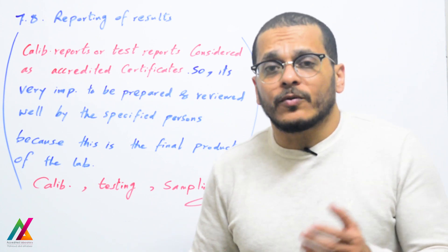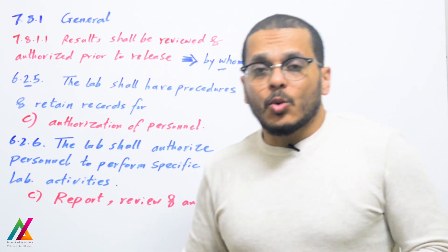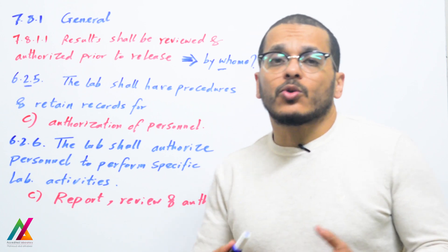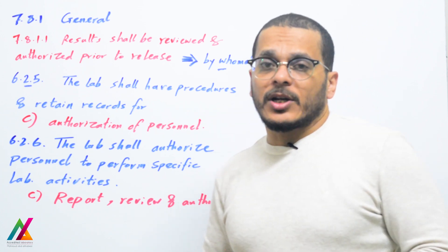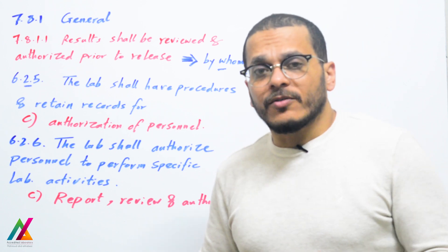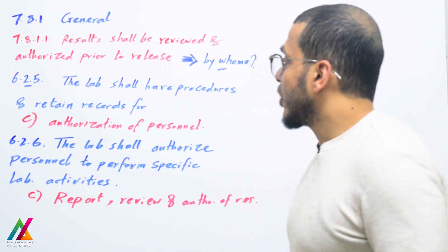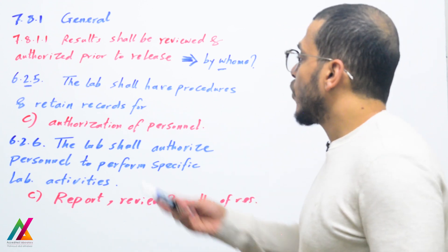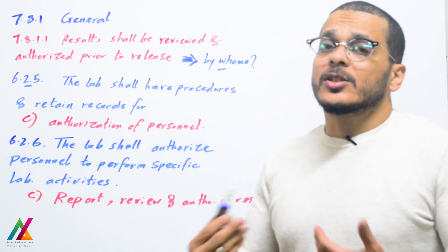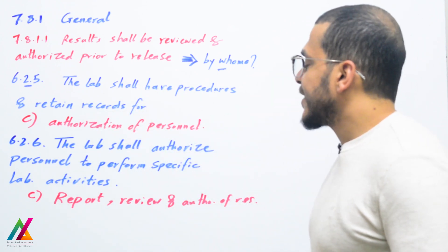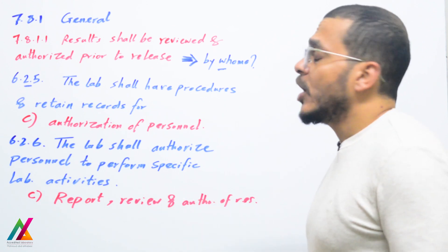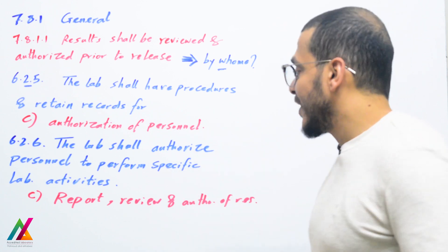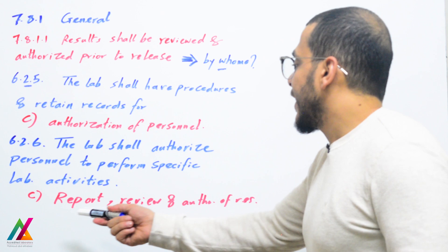Clause 7.8.1.1 states that results shall be reviewed and authorized prior to release to the customer. As mentioned in clause 6.2.5, the lab shall have procedures and retain records for authorization of personnel who is responsible to authorize these reports. In clause 6.2.6, the lab shall authorize specific personnel to perform specific lab activities — those with more experience to review and authorize results.